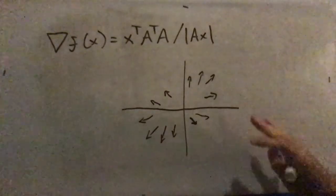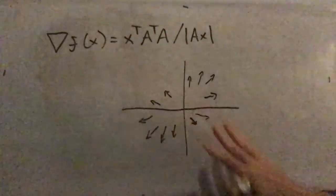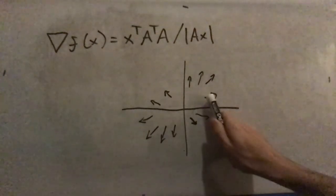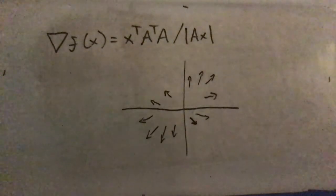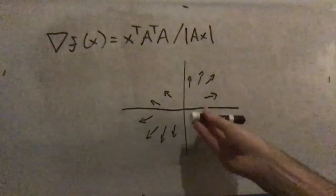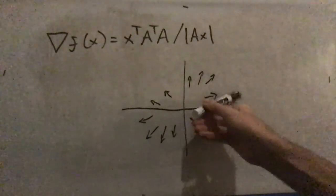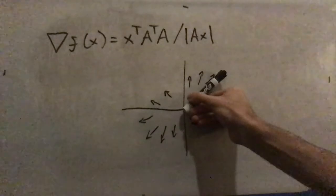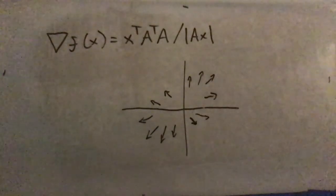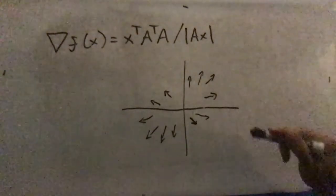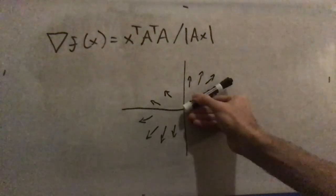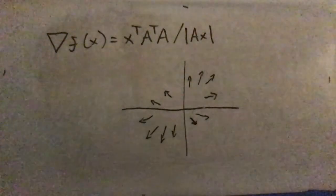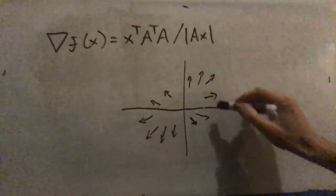Just to look ahead a little bit: once you have the gradient of a function, you can plot it as a vector field, drawing the gradient at each point. Considering all inputs x in some circle around the origin, something special happens when the gradient lines up with the position vector. That's where the eigenvector connection comes in — we have an input lining up with A transpose A times that vector divided by a scalar, giving an eigenvector flavor.